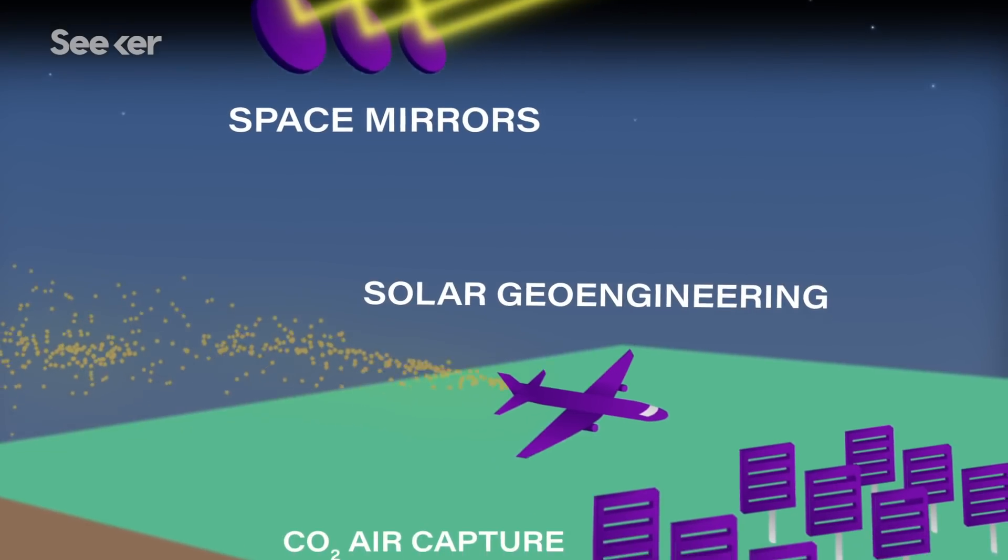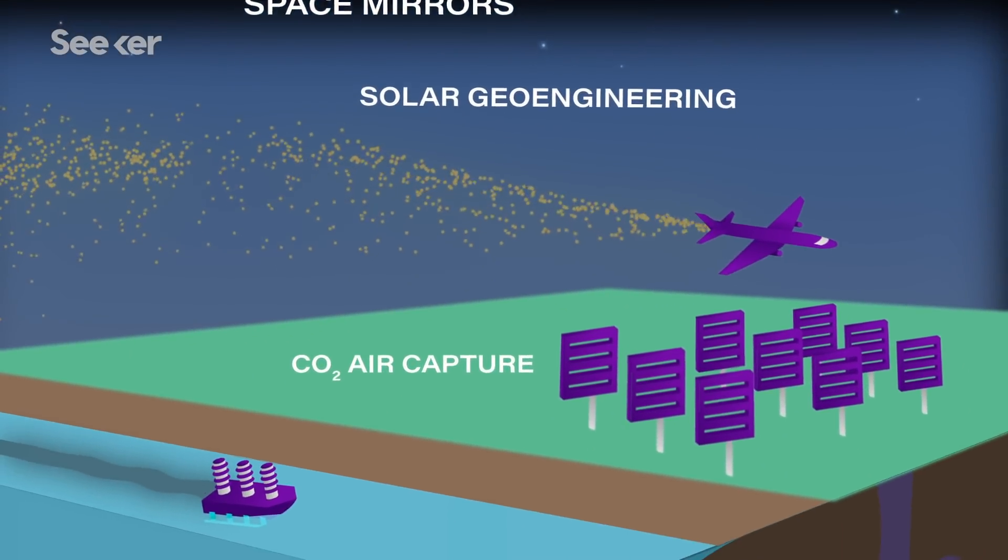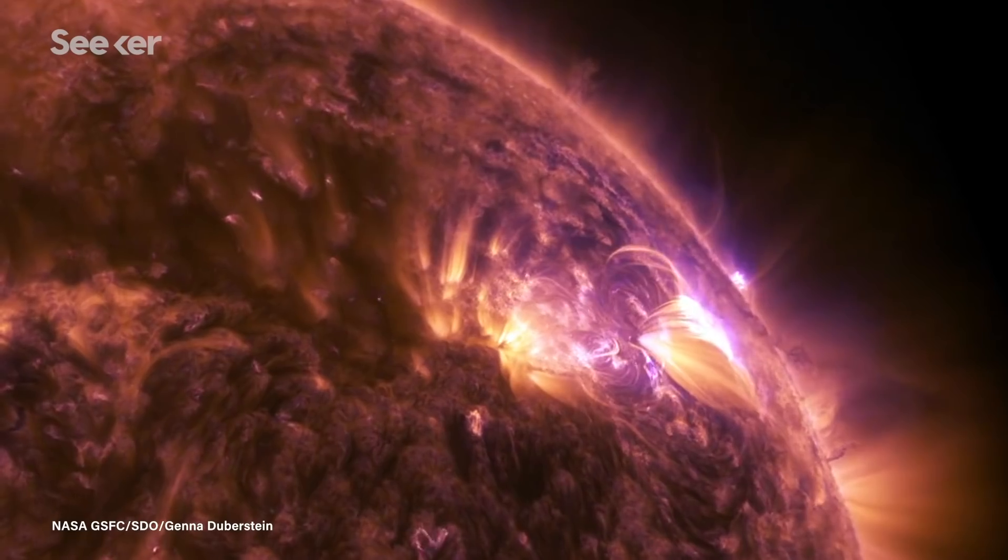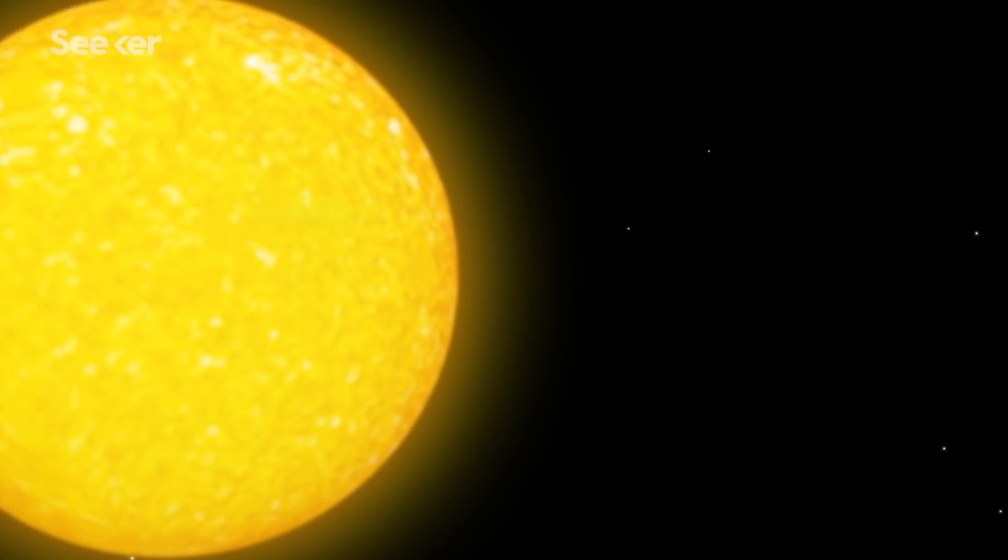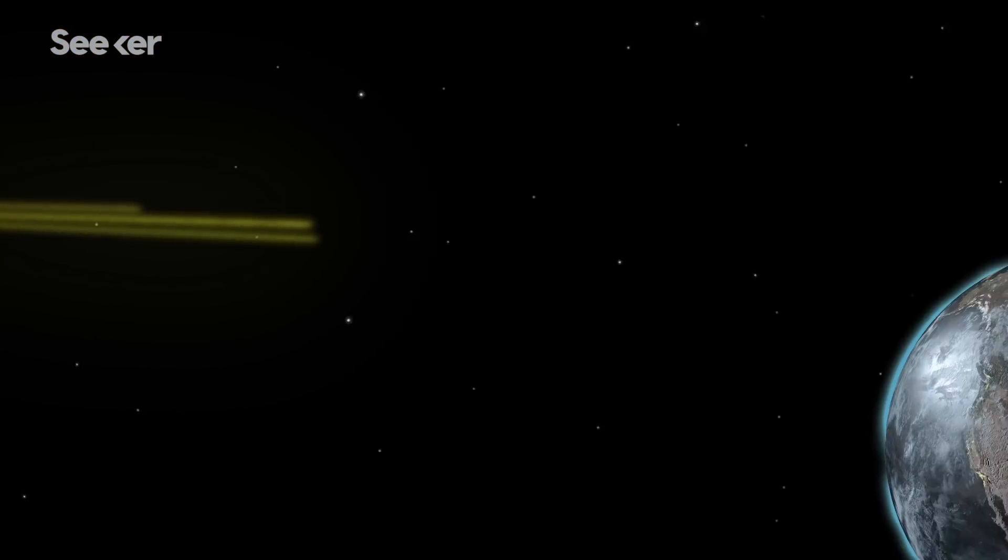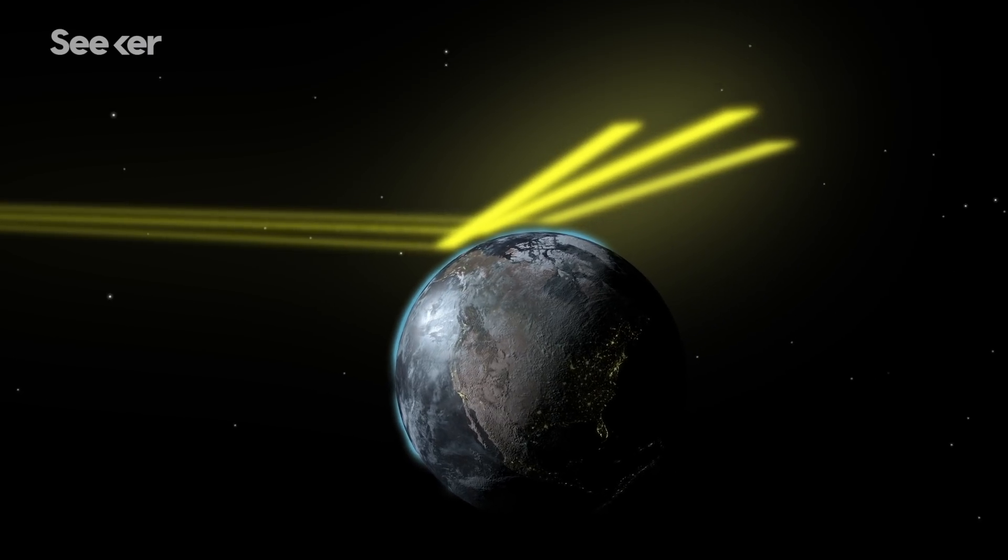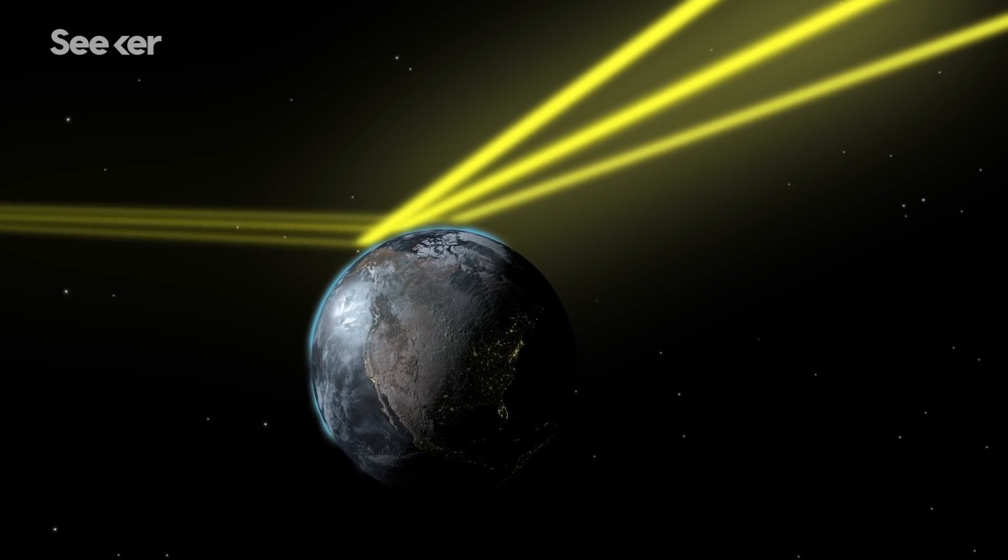Climate engineering is an umbrella term for a set of imagined technological responses to climate change. And I say imagined because most of the technologies that are being talked about are only on the chalkboard at this point. The latest front runner is solar geoengineering, a plan that would disperse particles into the stratosphere and could reduce global temperatures by bouncing the sun's rays back into space.